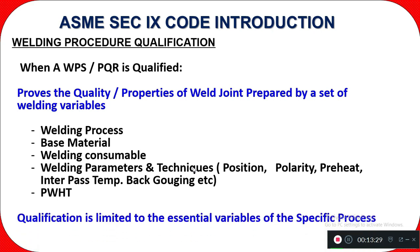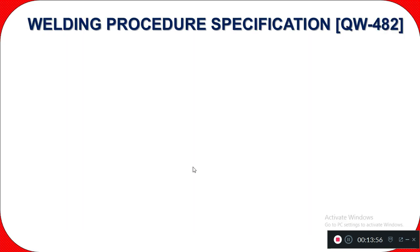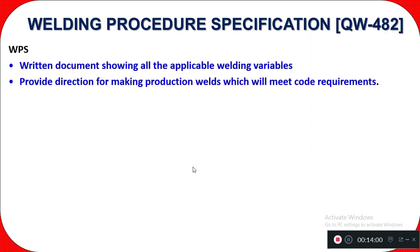Qualification is limited to the essential variables of the specific process. If any essential variable changes beyond the allowed limit, you must re-qualify the WPS. In the WPS — a written document — you can see all applicable welding variables: essential variables, non-essential variables, and supplementary essential variables.